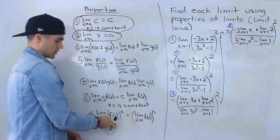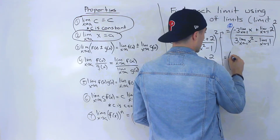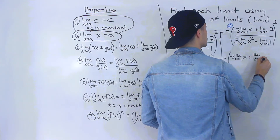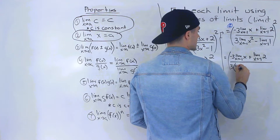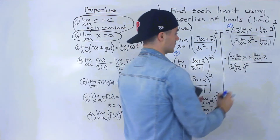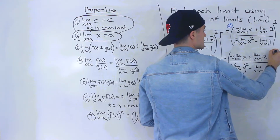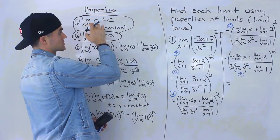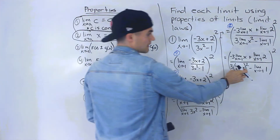The x squared term is not yet in basic form, so we apply law number seven again: we get three times limit as x approaches negative one of x, in brackets, all squared, minus limit as x approaches negative one of one, all squared. Now everything is either in format one — limit as x approaches a of a constant — or format two — limit as x approaches a of x.